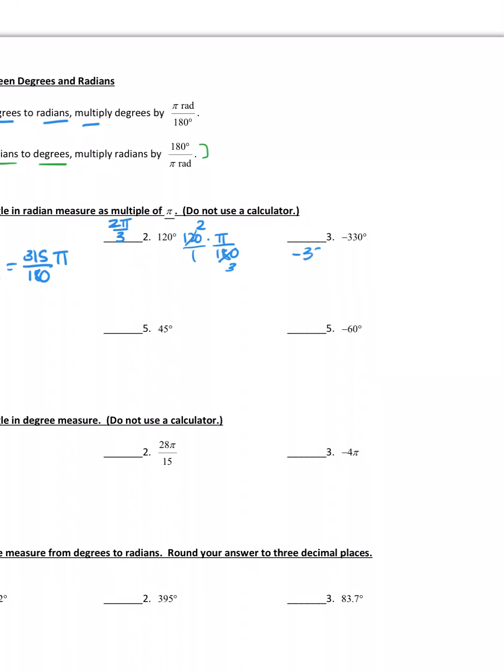What about negative 330 times pi over 180? We know we can cancel the zeros, divide them both by 10. If we divide them both by 3, we'll have negative 11 over 6, and that doesn't reduce further. So it's just negative 11π over 6.